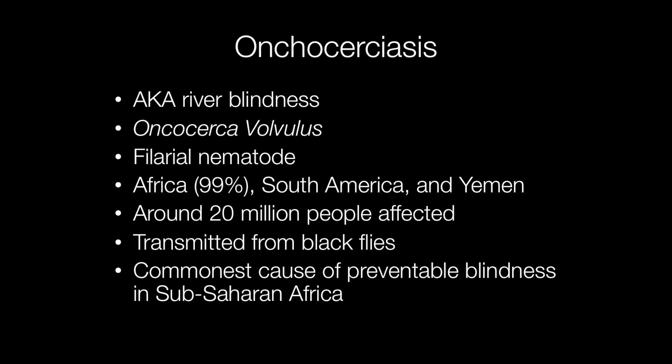Onchocerciasis is a parasitic infection caused by a filarial nematode called Onchocerca volvulus — a nematode is a worm. Worldwide it is estimated that around 20 million people are affected, but the greatest burden of disease is in sub-Saharan Africa, accounting for 99% of cases. An important consequence of Onchocerciasis is eventual blindness, and it is the commonest cause of preventable blindness in sub-Saharan Africa.